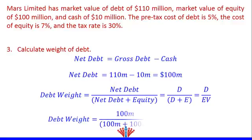Consequently, the weight of debt is $100 million divided by ($100 million plus $100 million), which equals $100 million divided by $200 million. This gives us 50% weight of debt. Thank you for watching this video.